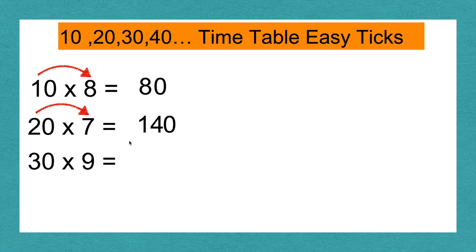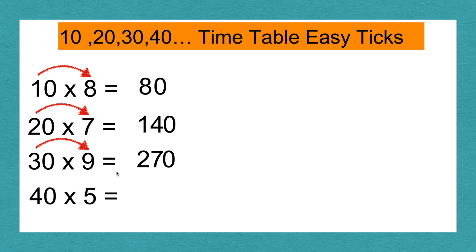30 times 9: 3 times 9 equals 27. Add the 0, and 30 times 9 equals 270. 40 times 5: 4 times 5 equals 20. Add the 0, and 40 times 5 equals 200.